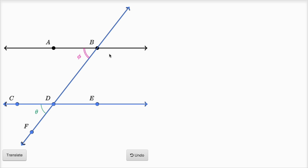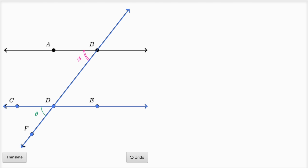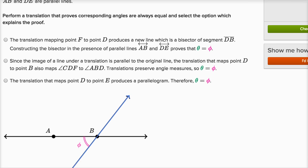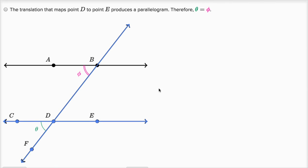So these are corresponding angles. Line FB is a transversal, and they already told us that line AB and line DE are indeed parallel lines. So we want to prove that the measure of these two angles are equal. There's many ways that you can do this geometrically, and we do that in many Khan Academy videos.